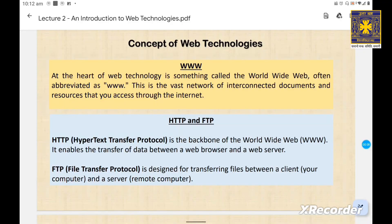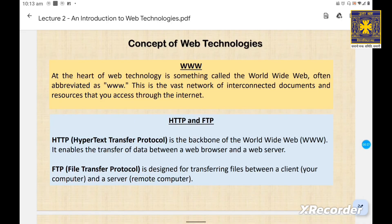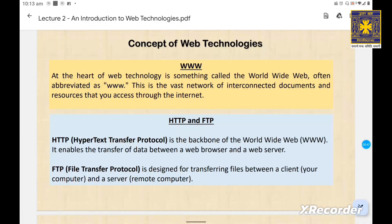At the heart of web technology is the World Wide Web, often abbreviated as WWW. This is the vast network of interconnected documents and resources that you access through the internet — a giant collection of interconnected pages, pictures, videos, and other content. When you type a website address into your browser, like www.example.com, you are accessing a specific page on the World Wide Web, like opening a door to a room full of information.